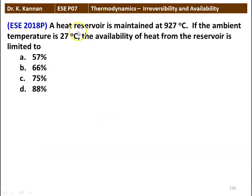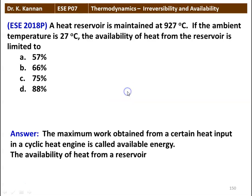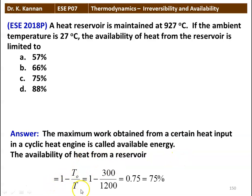The next question: a heat reservoir is maintained at 927 degrees Celsius. If the ambient temperature is 27 degrees Celsius, the availability of heat from the reservoir is limited to — options: 57%, 66%, 75%, and 88%. The maximum work obtained from a heat input in a cyclic heat engine is called available energy. Availability equals 1 minus T0/T: 1 minus 300/1200 equals 0.75, which is 75%. The answer is 75 percent.